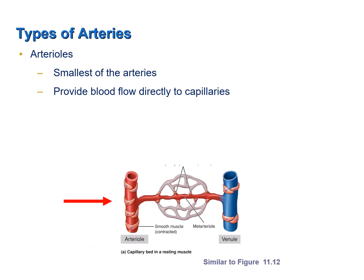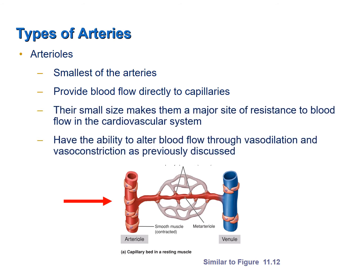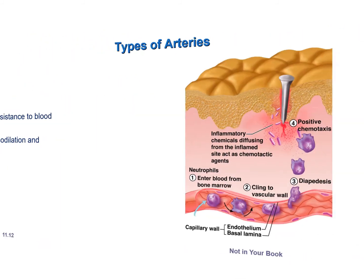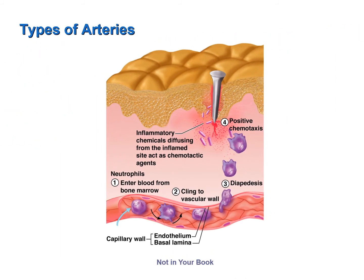Arterioles are the smallest of the arteries and they provide blood flow directly to the capillaries. Because they are so small, they are a major site of resistance to blood flow in the vascular system. They have the ability to alter blood flow through vasodilation and vasoconstriction in response to changes in metabolic need. In response to infection or injury, tissues release certain substances that cause the relaxation of smooth muscles in the walls of nearby arterioles, causing vasodilation and an increase of blood flow to the area of injury or infection. This results in the redness and swelling, or edema, characteristic of a typical inflammatory response.